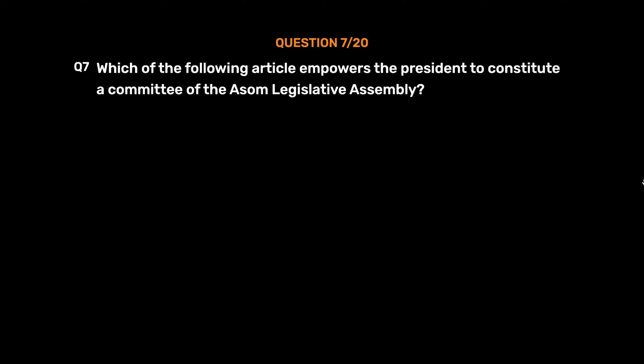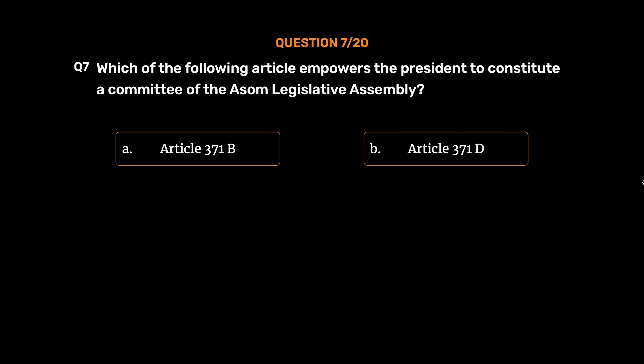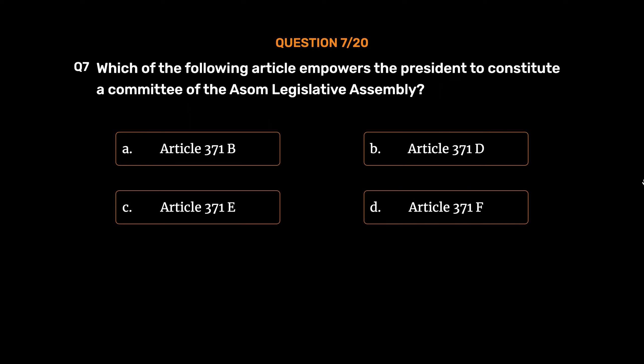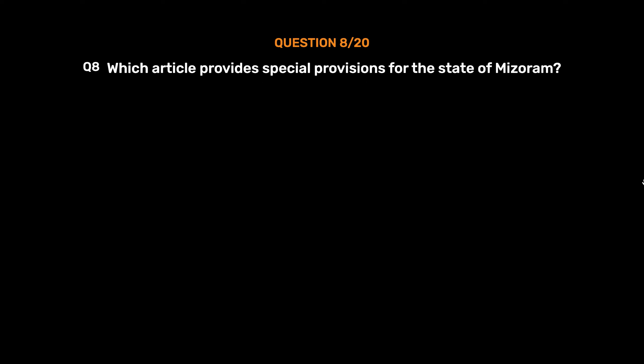Question No. 7: Which of the following articles empowers the President to constitute a committee of the Assam Legislative Assembly? Option A: Article 371B. Option B: Article 371D. Option C: Article 371E. Option D: Article 371F. The correct answer is Option A: Article 371B.